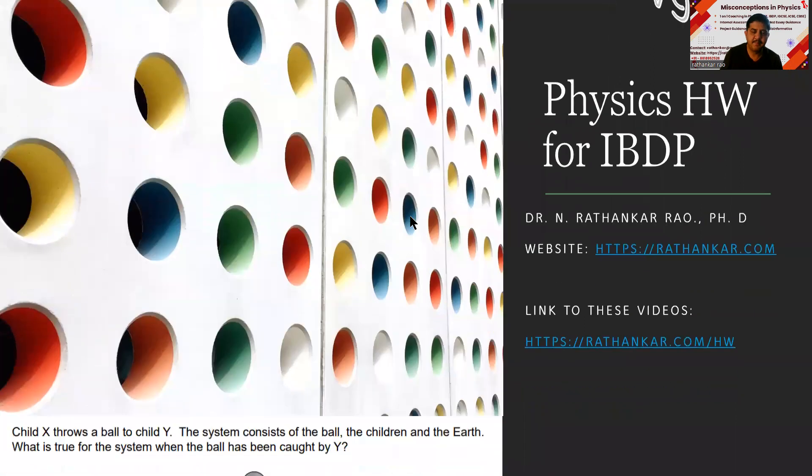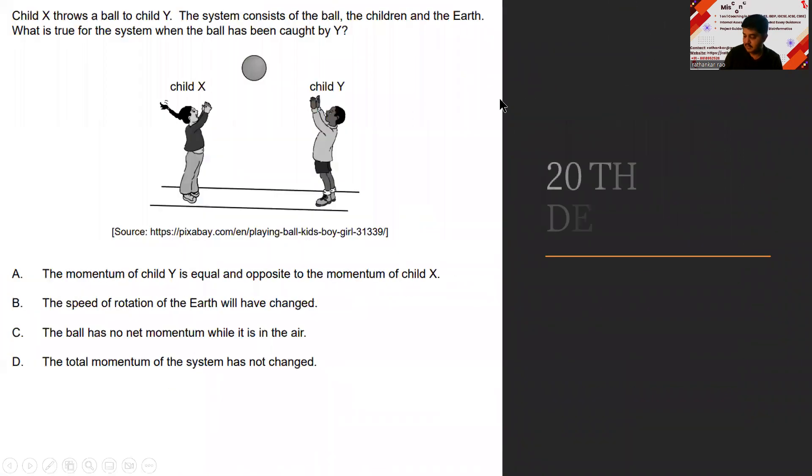The first question: Child X throws a ball to child Y. The system consists of the ball and the earth, children on the earth. What is true for the system when the ball has been caught? The momentum of child X is equal and opposite to the momentum of child Y—is this possible?